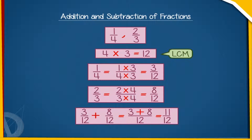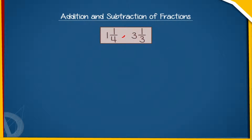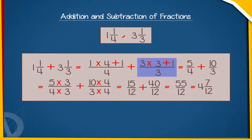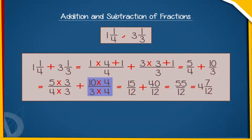Similarly, if we want to add mixed fractions like 1 and 1 by 4, and 3 and 1 by 3, we first write them as improper fractions. 1 and 1 by 4 plus 3 and 1 by 3 equals (1×4+1)/4 plus (3×3+1)/3, which equals 5 by 4 plus 10 by 3.